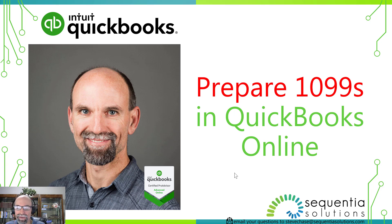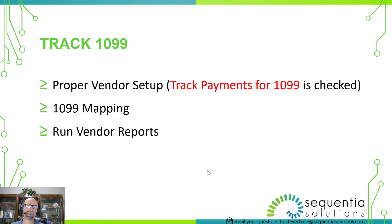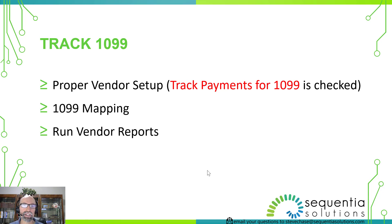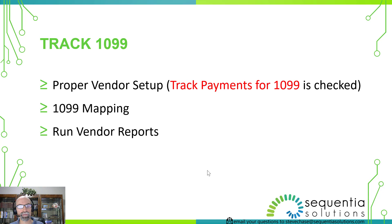In this video, I'm going to share with you how to prepare 1099s using QuickBooks Online. You're going to learn the proper vendor setup, including an important checkbox that says 'track payments for 1099.' We're going to learn how to set up the mapping so that each account — like subcontractors or contract labor — gets pulled in to produce the report based on the contractors you'd like to issue a 1099 to.